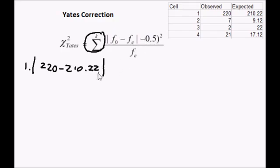I am going to subtract 0.5 and this is all squared and this is divided by the expected which is 210.22. And if I figure this out on a calculator, I get 0.41.